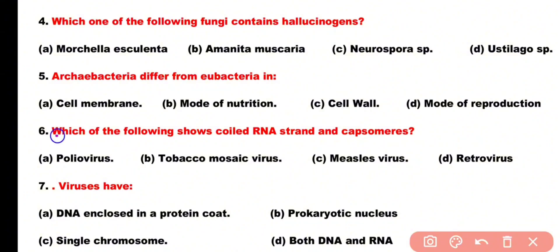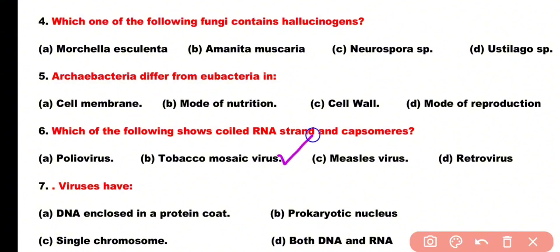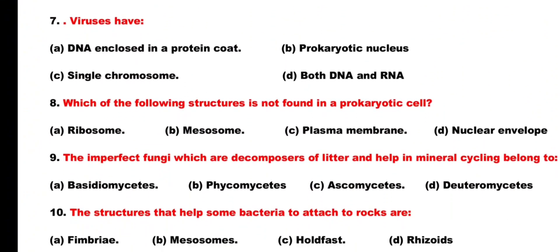Question number 6: Which of the following shows coiled RNA strand and capsomeres? Options: poliovirus, tobacco mosaic virus, measles virus, retrovirus. Correct answer is option B. TMV or tobacco mosaic virus has coiled RNA strand and capsomeres. Question number 7: Viruses have DNA enclosed in a protein coat.